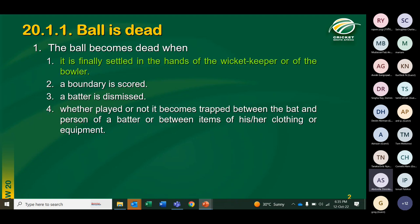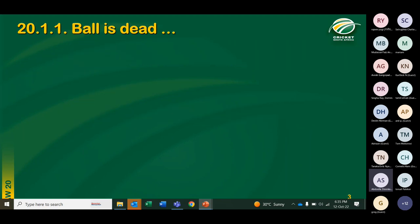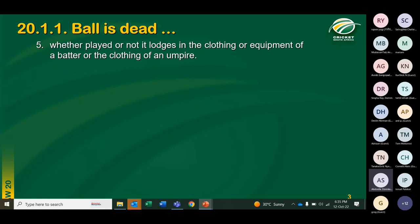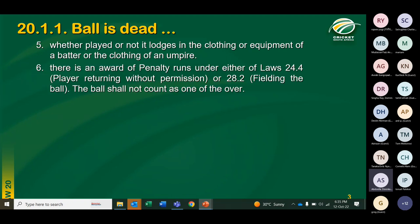The ball automatically becomes dead when, whether played or not, it gets trapped between the bat and the person of the batter, or between items of the batter's clothing or equipment. It also automatically becomes dead when it lodges in the clothing or equipment of the batter or the clothing of an umpire — for example, if the ball goes into the top flap of the batting pad and gets lodged there. Also, when a player returning without permission touches the ball, or when there is illegal fielding.